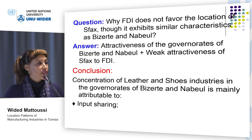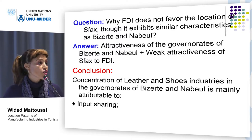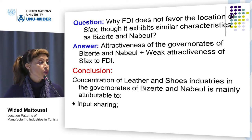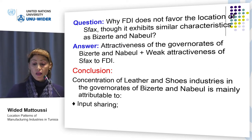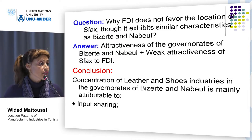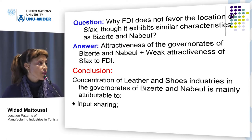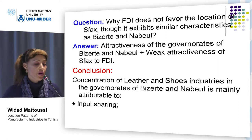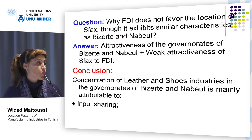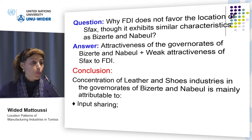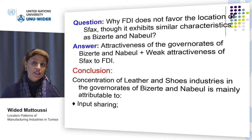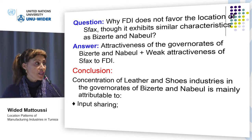Given that specialization in this sector is largely impulsed by foreign direct investment, the question which arises is: why does foreign direct investment not favor the location of the governorate of Sfax, though it has similar characteristics as the first two governorates, with its two tanneries and its important port, the second in the country? The answer is likely due mainly to two reasons. First, the attractiveness of the first two governorates — the beauty of their landscape, their mild weather, and their touristic infrastructure, especially for the case of Nabeul. The second reason is the weak attractiveness of Sfax to foreign direct investment, including its poor international accessibility. Sfax also exhibits diseconomies quite common to large towns and central business districts, and it is also quite a capitalistic governorate.